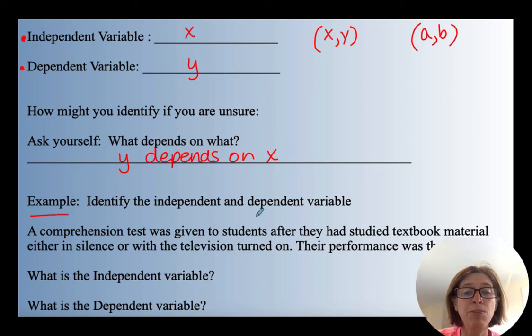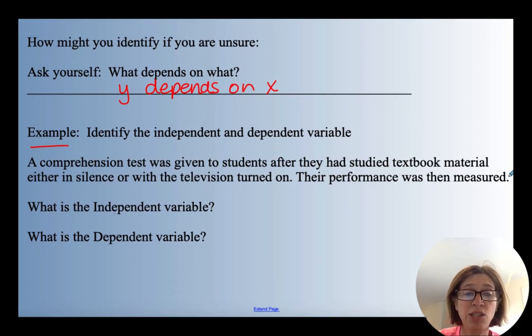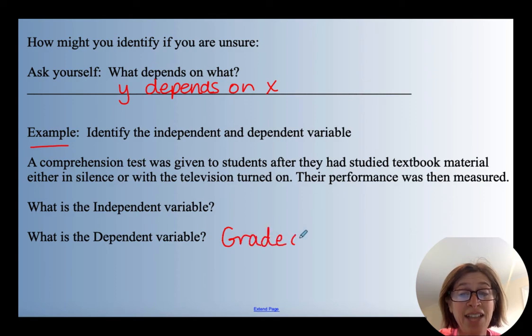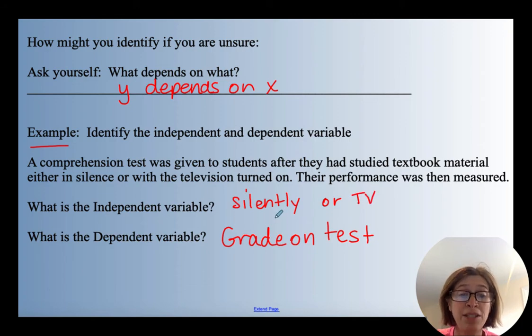Here's an example. Identify the independent and dependent variable. A comprehension test was given to students after they had studied textbook material either in silence or with the TV on. Their performance was measured. So what was the independent variable? Well, the independent variable would be the thing that you did. The dependent variable would be what the result was. So your grade on the test is the dependent variable.